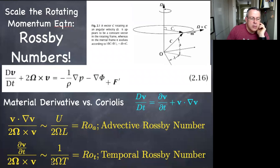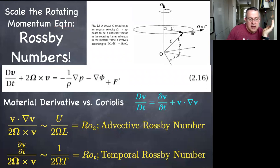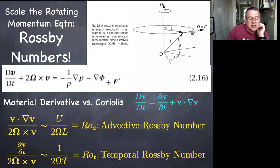For the temporal Rossby number: 1/(2ω) is closely related to a day. If the time scale of the motion is much shorter than a day, the temporal Rossby number is large. If the motion is very slow — eddies, gyres, things that take months or years or decades — then the temporal Rossby number will be small.